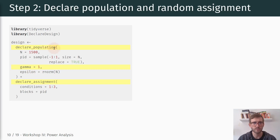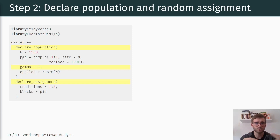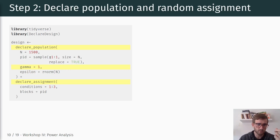The first command we start with is 'declare_population', and there are a couple of basic features we set up here. We set the sample size to 1500 as discussed, and we have one pre-treatment covariate which is party identification. We also have one random assignment which we'll declare in a second. The first thing is to set the pre-treatment covariate as an exogenous factor — a three-category variable.